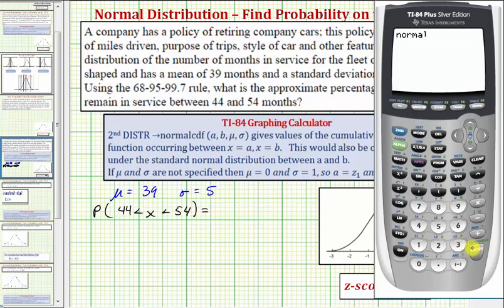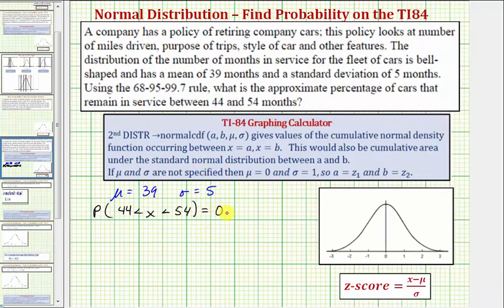So now we press enter, and it gives us the percent as a decimal. As a decimal, this would be approximately 0.1573. Which as a percent would be 15.73 percent.